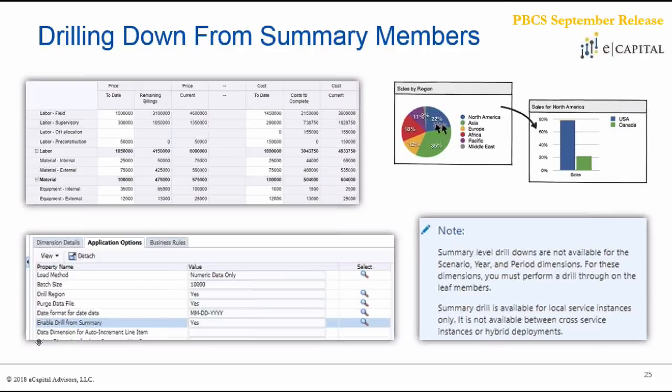After enabling this, you can load data with drill region set to yes. This allows you to look at a summarized level — anything besides scenario, year, and period — in forms or reports, and drill into the detail for up to 1,000 descendants of a summary level member, giving you detail into the source data.